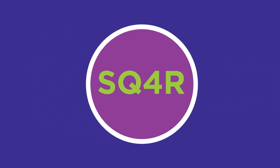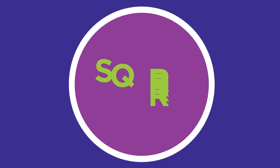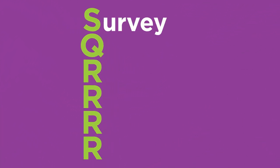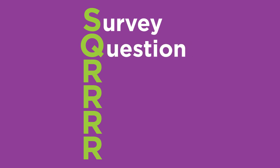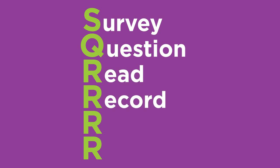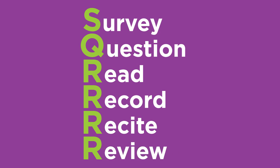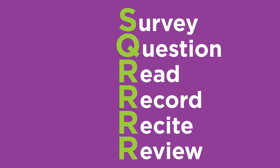SQ4R — what does that mean? It's an acronym for six steps to effectively read and understand text: survey the chapter or article, write questions for each heading, read the information one section at a time, record important information by taking notes, recite your notes out loud, and review your questions and try to answer them.